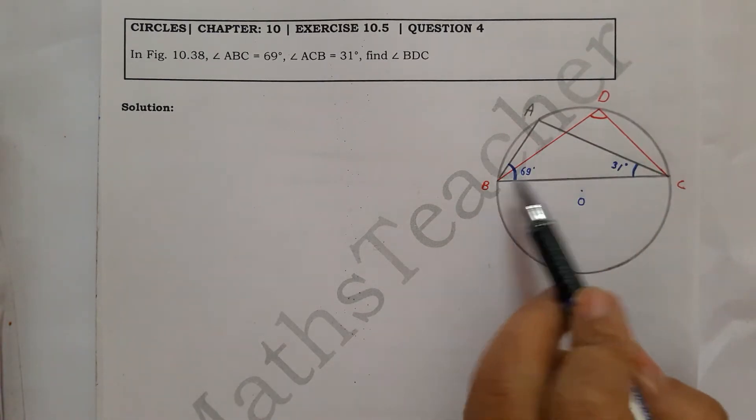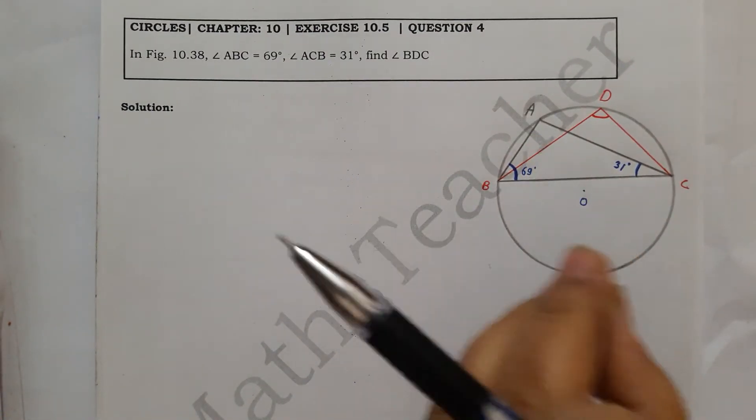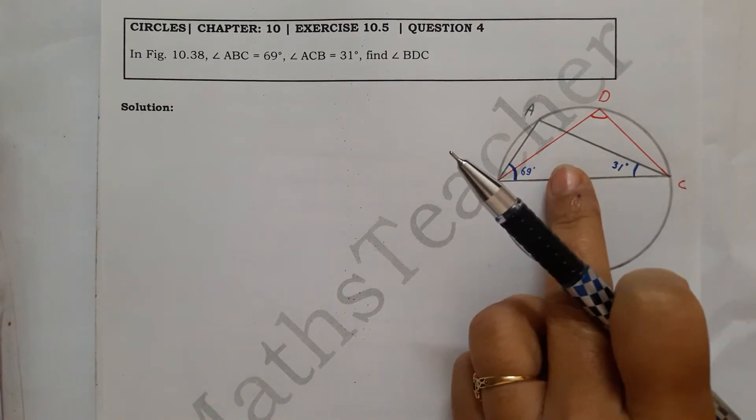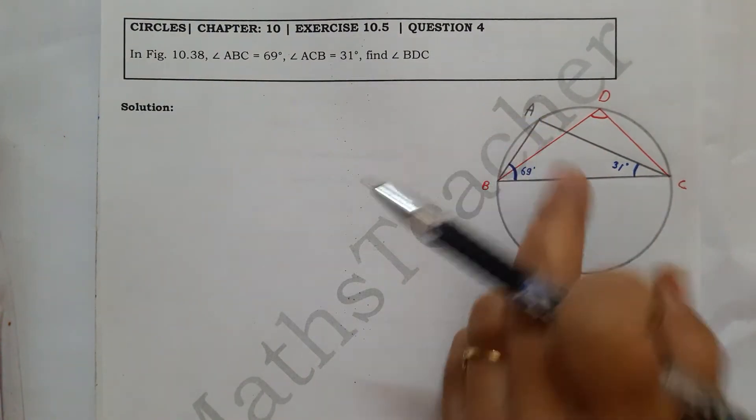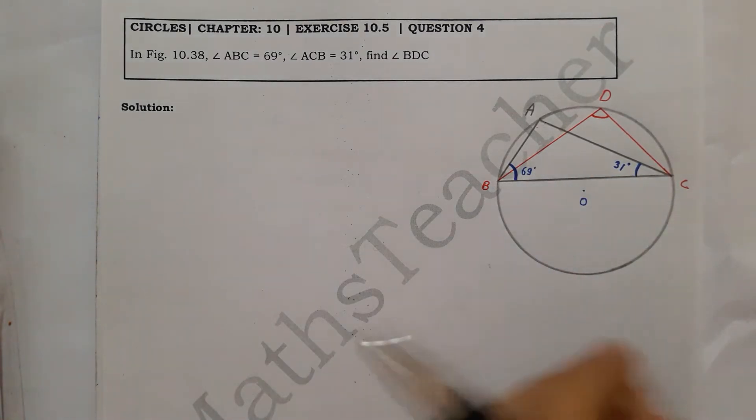Whether it is the same angle in the major segment or in the minor segment, if it is the same segment, the angles are equal. This angle and this angle are equal.